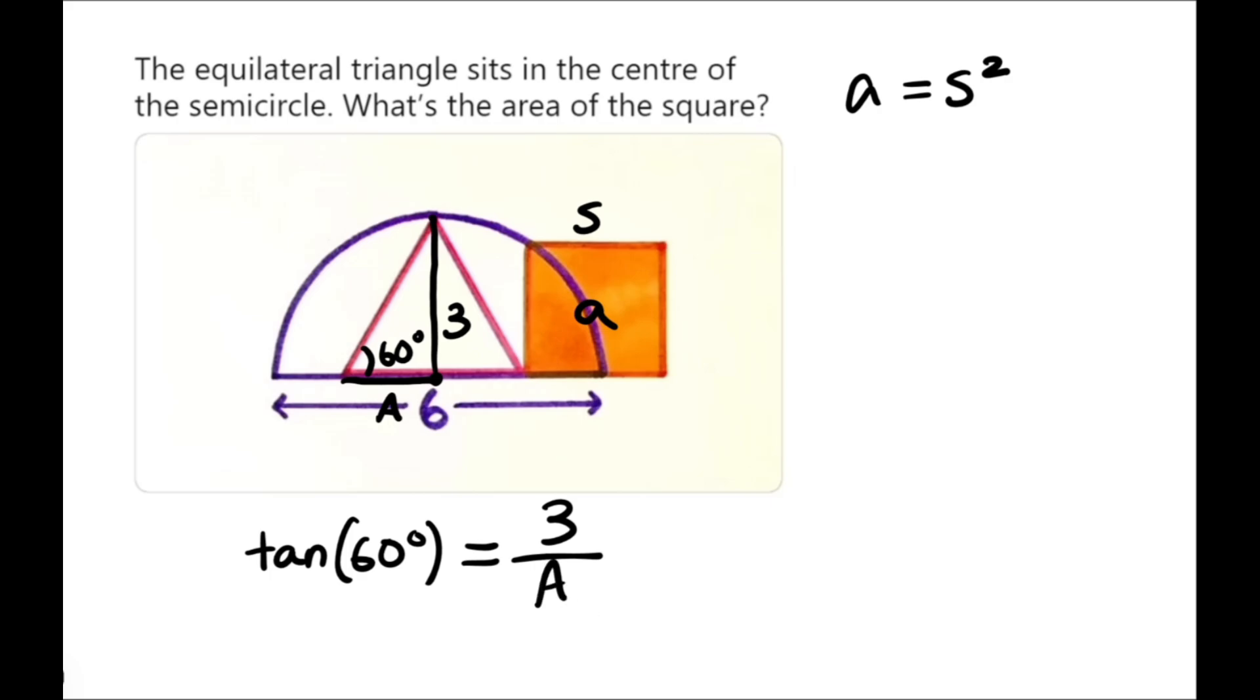We're trying to find A. Now, we can rearrange this and just say that A is equal to 3 divided by the tangent of 60. Now, you do need a calculator to compute this, and that's going to equal roughly 1.73.